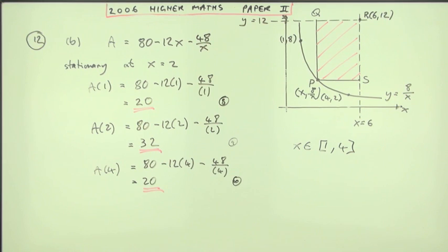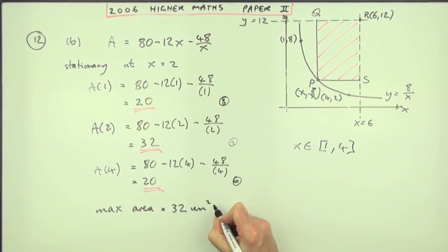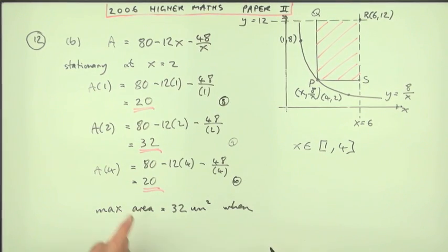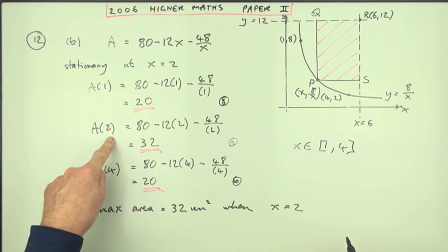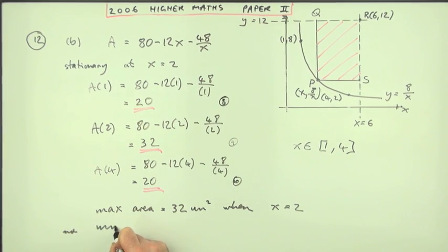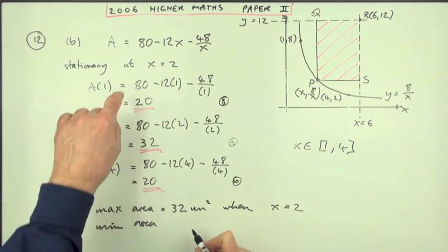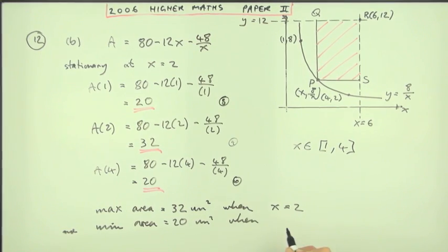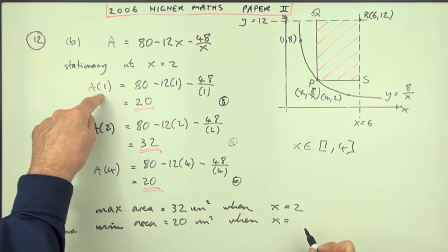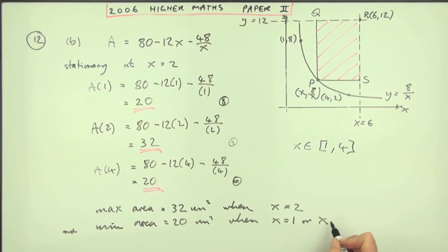Now it's just a case of answering the question. So for the final mark, for the 11th mark, I'll have to say what's the maximum value. So the maximum area is 32, let's just call it units, so units squared, and that happens when x equals 2. And the minimum area that you get is 20 square units, and that happens twice when x equals 1 or 4. When x equals 1 or x equals 4. Now writing all of that gets the final mark.